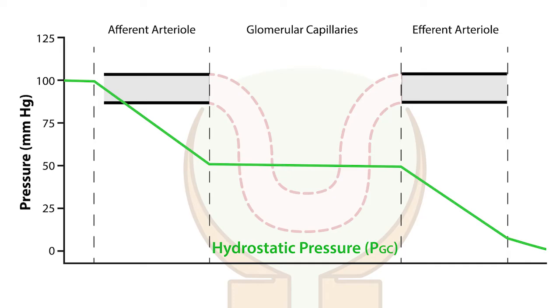Now, let's pay close attention to the glomerular capillary hydrostatic pressure as efferent resistance increases, which is represented by the narrowing of the efferent arterial.